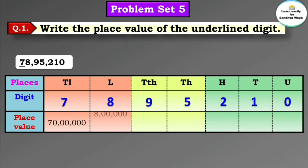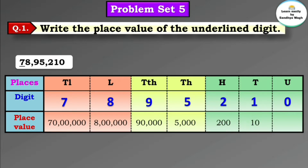8's place value is 8 lakh, 9's place value is 90,000, 5's place value is 5,000. In the question, the underlined digit is 7, so the place value of 7 is 70 lakh.